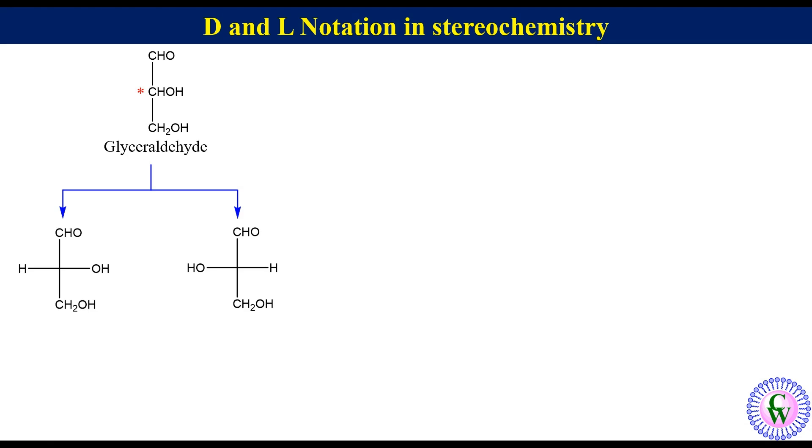One thing to be noted here is that for determining capital D and capital L configuration, the Fischer projection should be drawn in such a way that the more oxidized carbon should be at the top. In this molecule CHO is the most oxidized carbon so it is on the top.